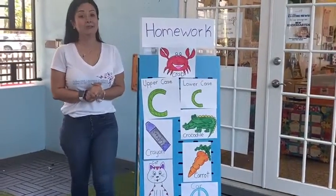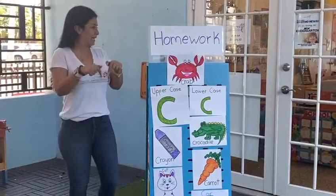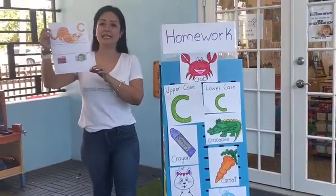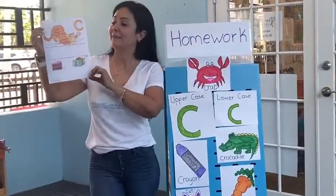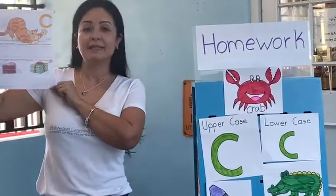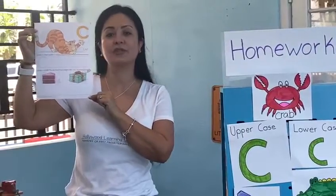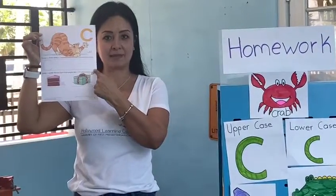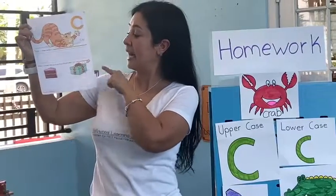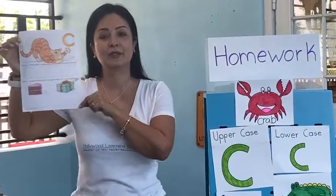Now it's time to explain the homework for today. This is the homework for the letter C. C is for cat. Trace C and then write the letter C three times. Then you write C under the picture that begins with the letter C.